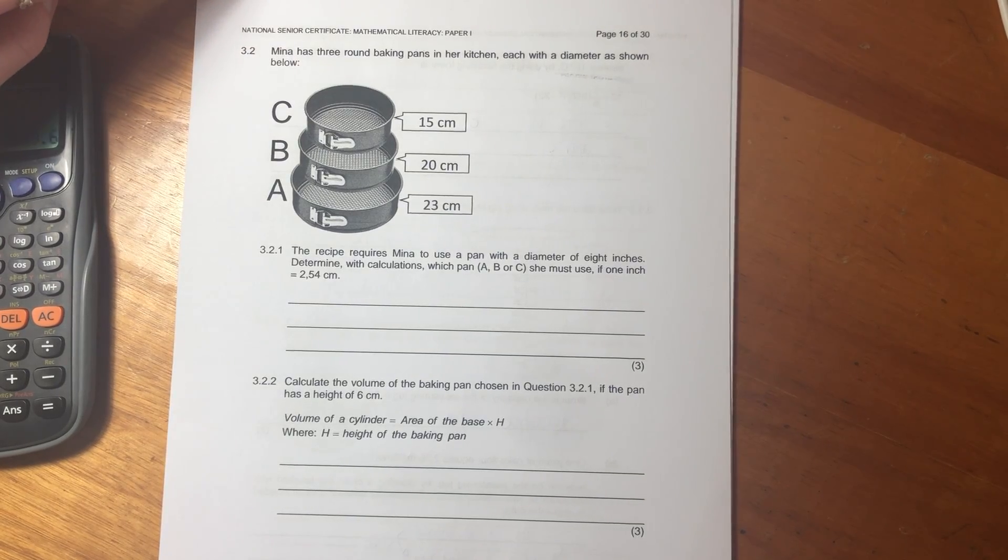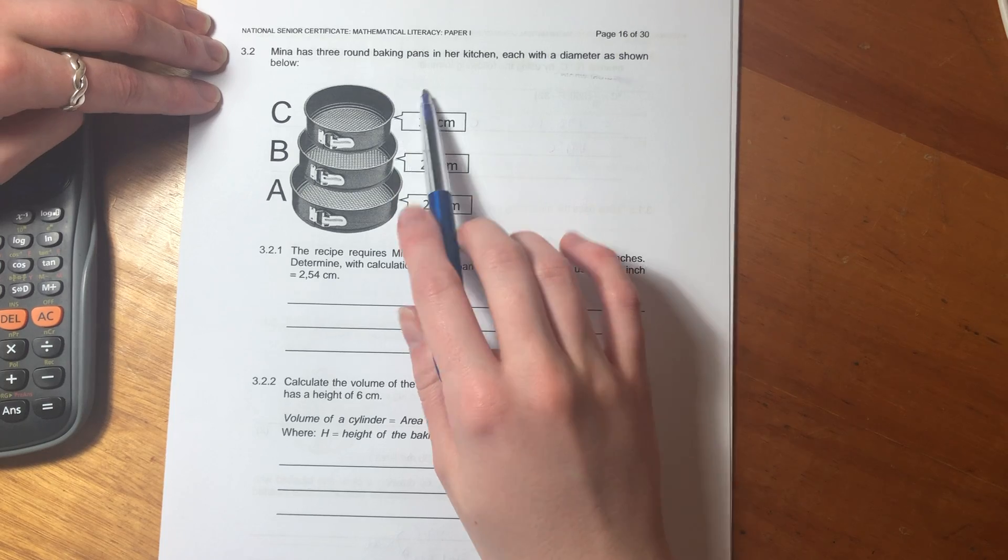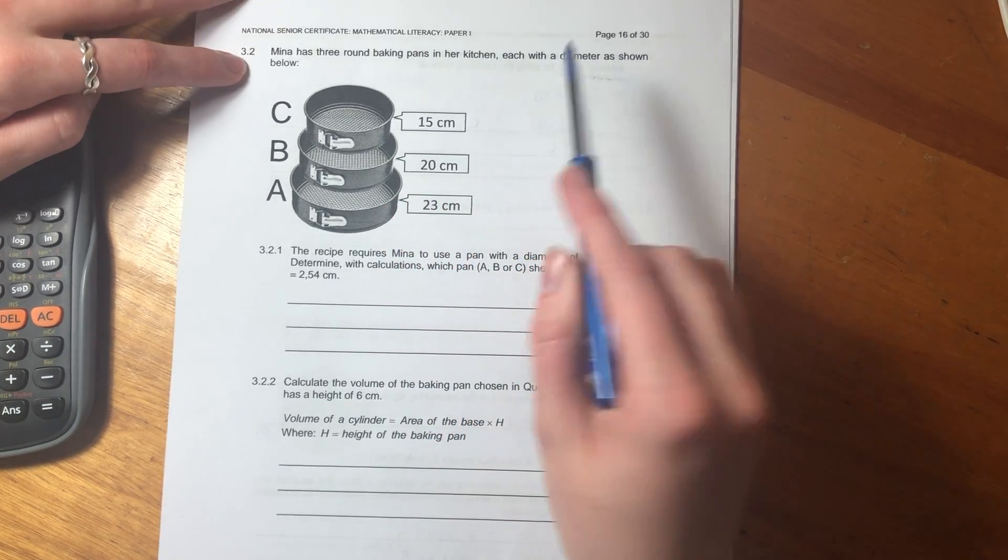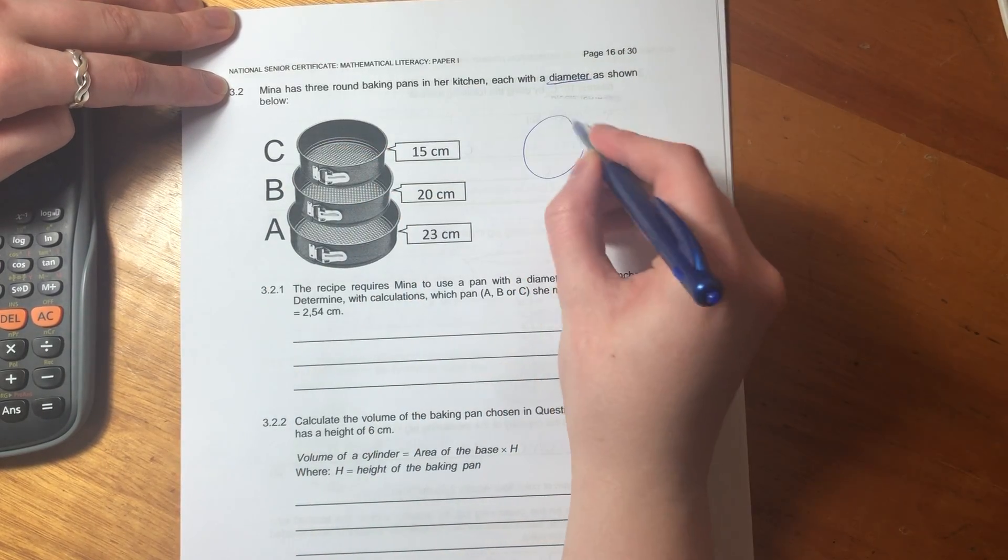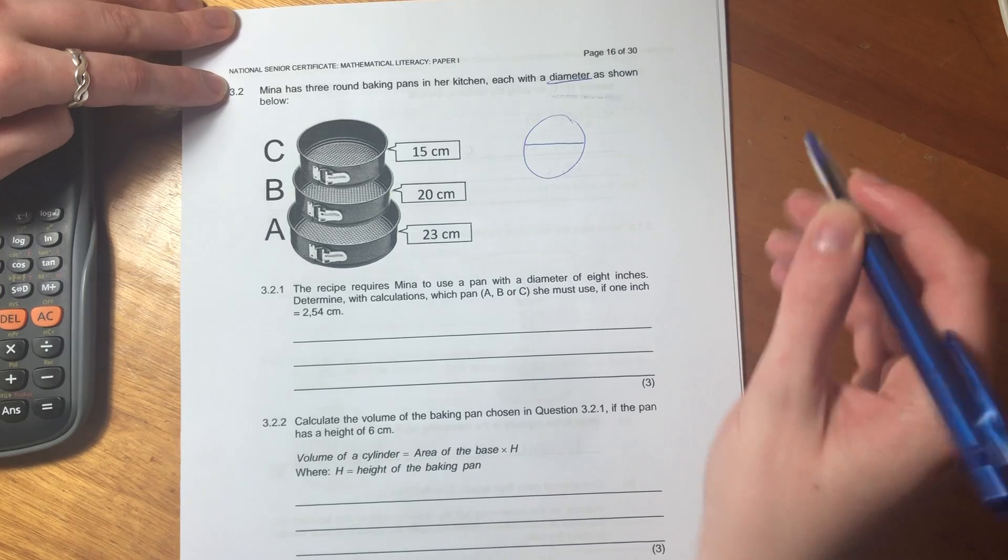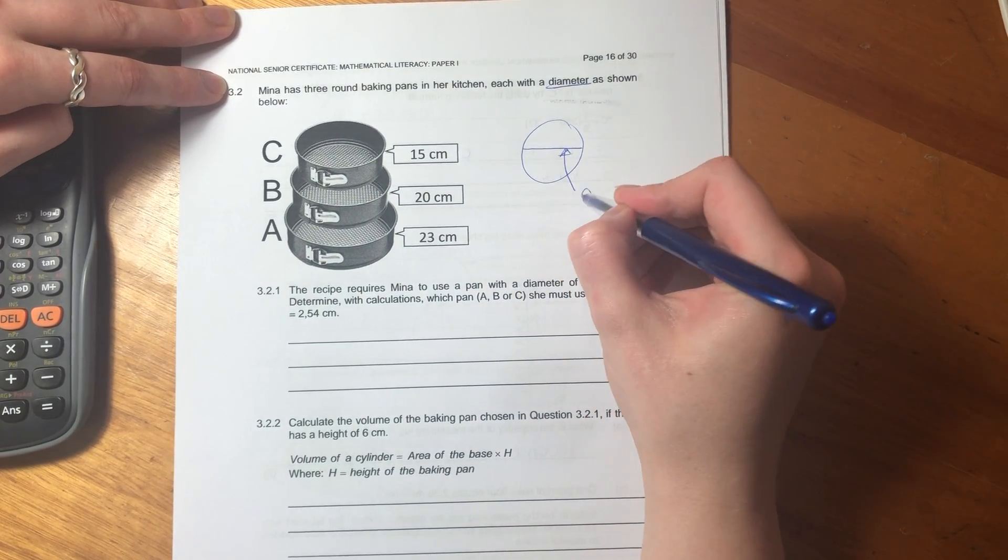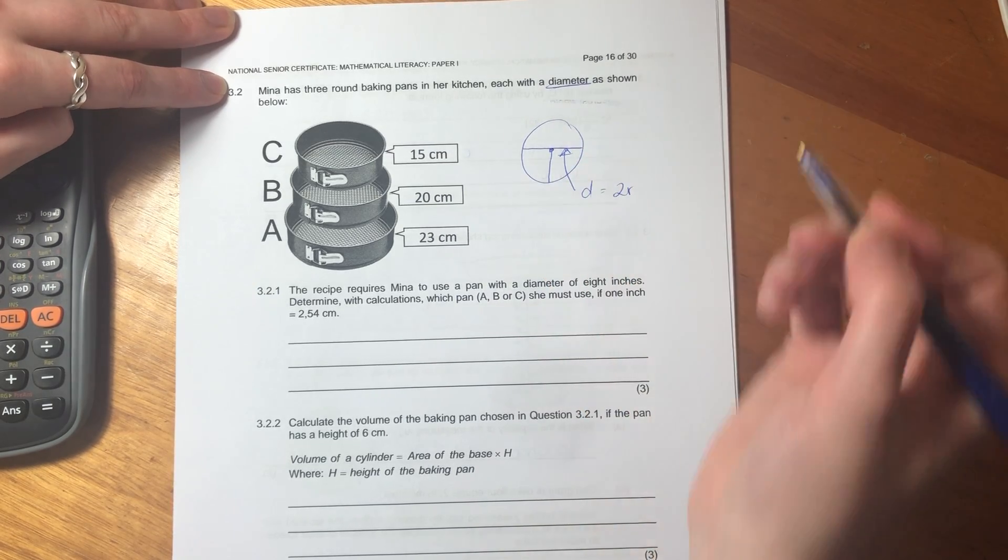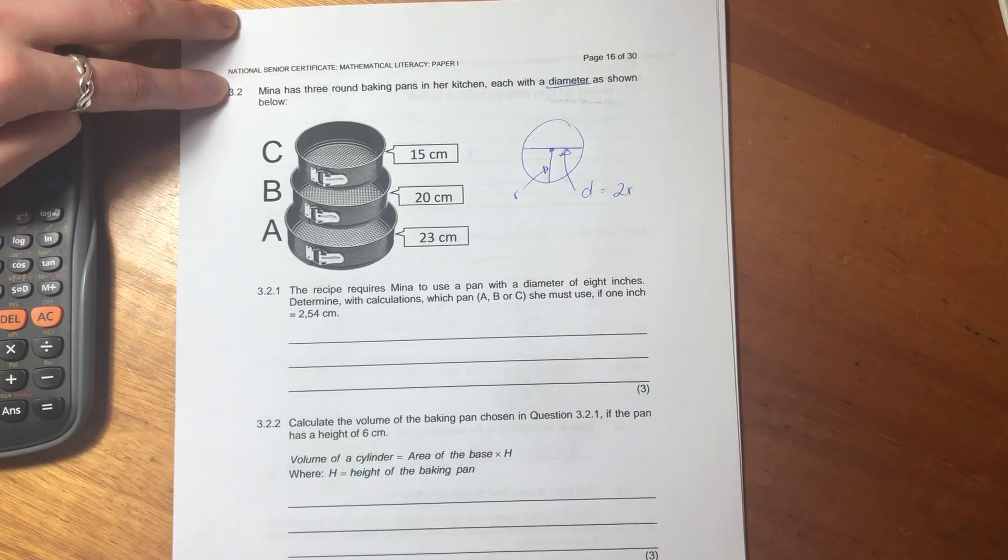Okay, and we are back. So, 3.2 says Mina has three round baking pans in her kitchen, each with a diameter as shown below. Remember, diameter means going from one side of the circle to the other. And the diameter always equals two times the radius, because the radius only goes from the middle to the side. Very important, so this guy is the radius.